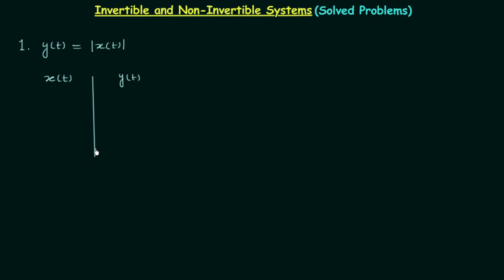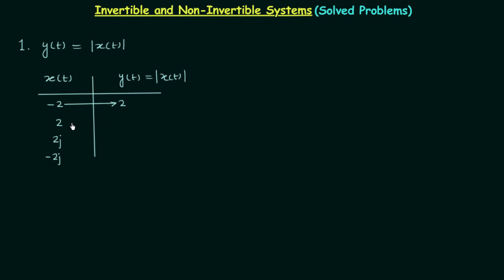The first input value I will take is minus 2. y(t) = |x(t)|, so x(t) = -2 gives y(t) = |-2| = 2. The next value is 2: |2| = 2. Then 2j: |2j| = 2. Then -2j: |-2j| = 2. So when x(t) equals -2, 2, 2j, or -2j, the output is 2 in all cases.